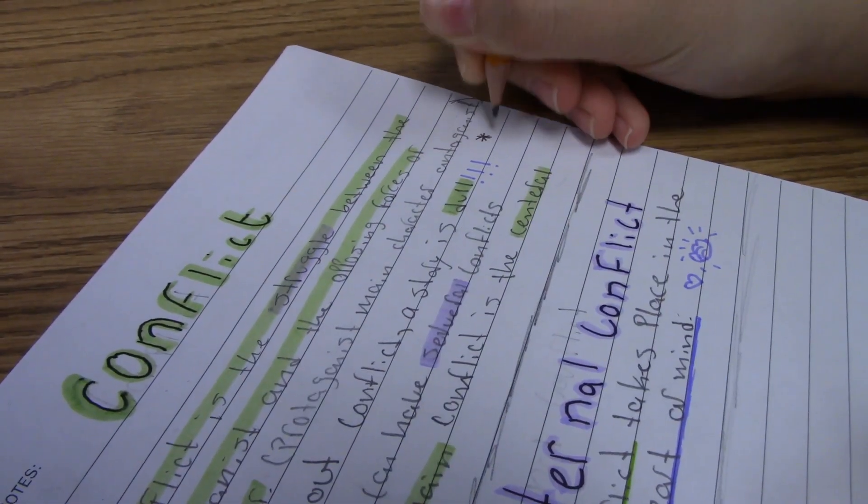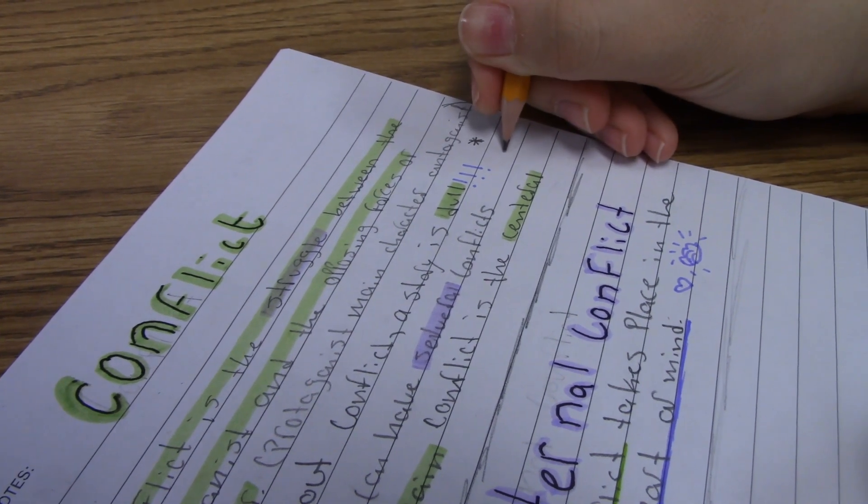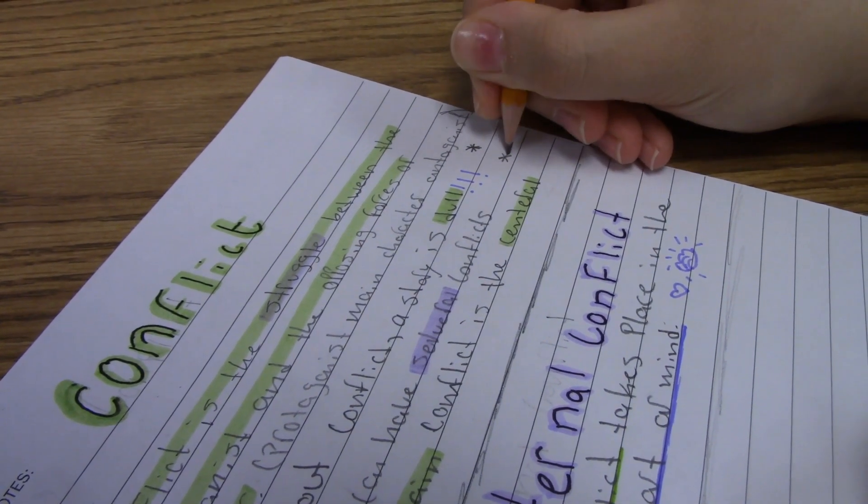Here's a tip: put a question mark by any area that you're confused about and an asterisk for possible test questions.